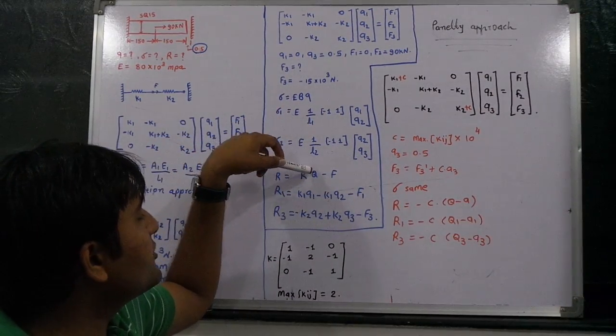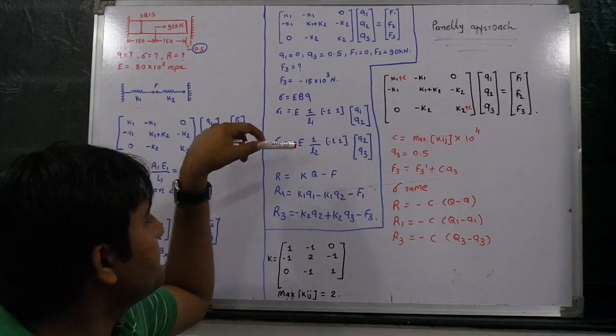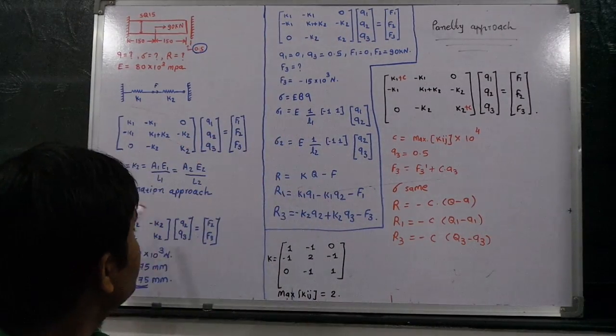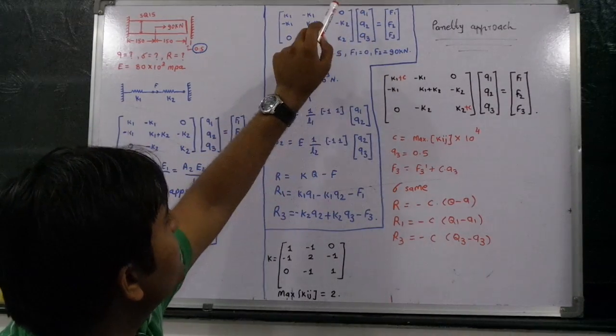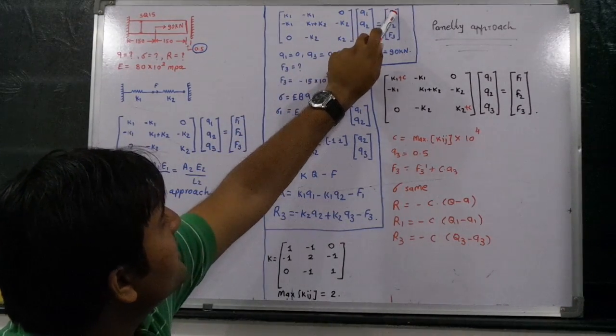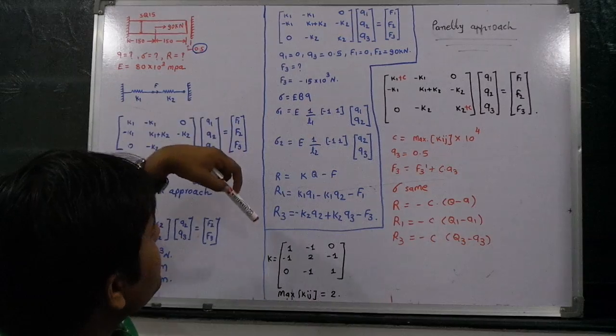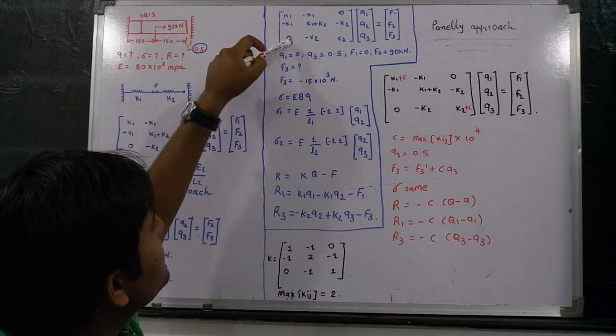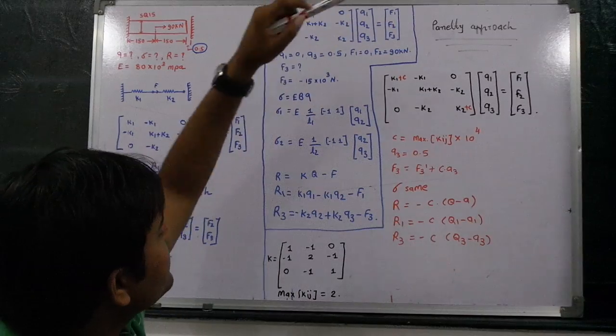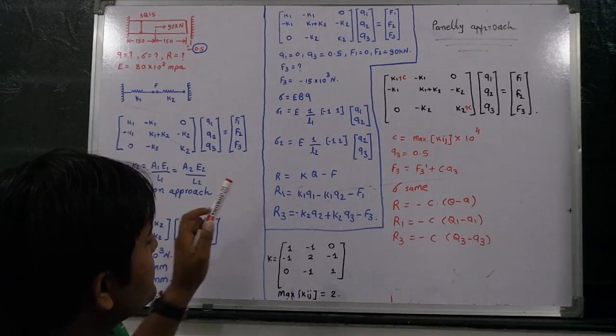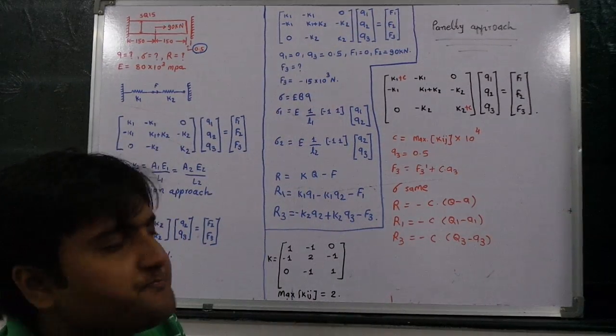Reaction is equal to K into Q minus F, where R1 is equal to the first row, K1 into Q1 minus K1 into Q2, 0 into Q3, minus F1. And R3 is equal to 0 into Q1, minus K2 into Q2, plus K2 into Q3, minus F3.